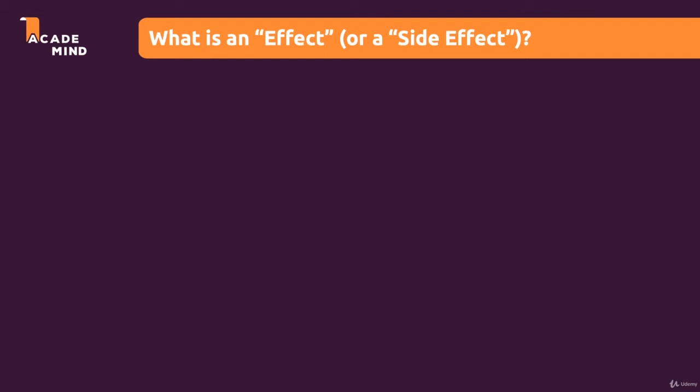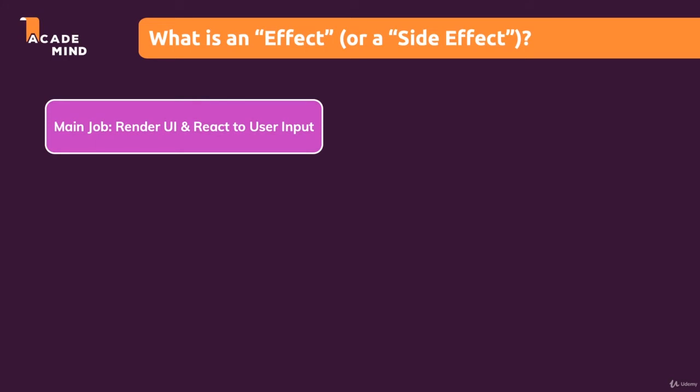Well, let's not forget that our components in the React app, and the React library itself, has one main job: to render the UI, to react to user input, and to re-render the UI when it's needed. With state and events and all of that, the main job was to bring something onto the screen and to make sure that the user may interact with it and that what's shown may change based on certain events, for example, a button click or some text being entered.